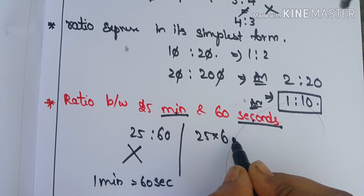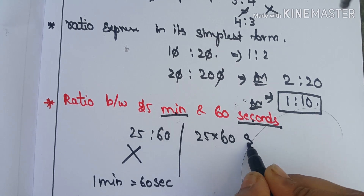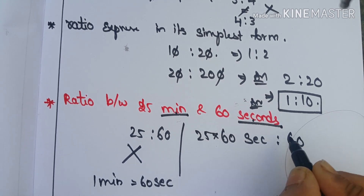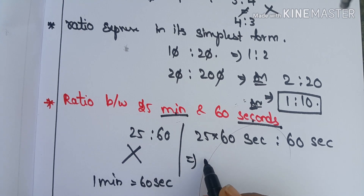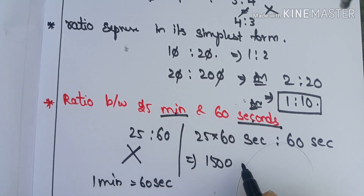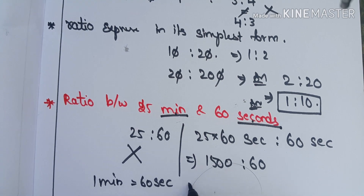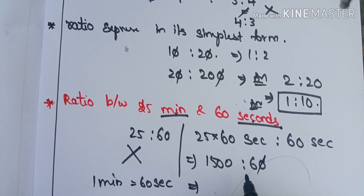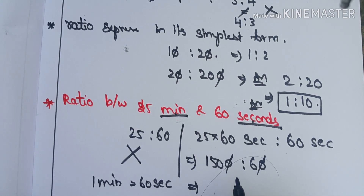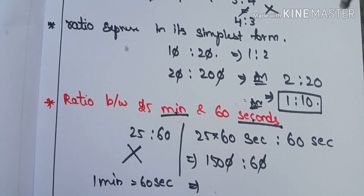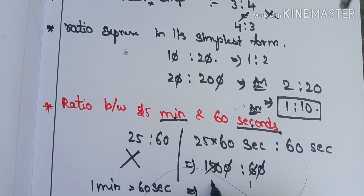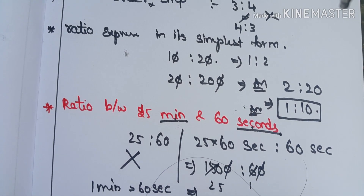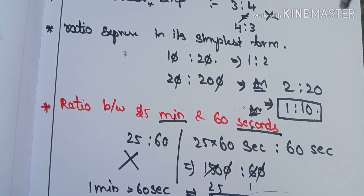This is 25 minutes to 60 seconds. Converting 25 minutes: 25 times 60 gives 1,500 seconds. So 1,500 is to 60 — this cancels out, and the final answer is 25 is to 1.